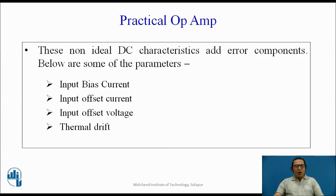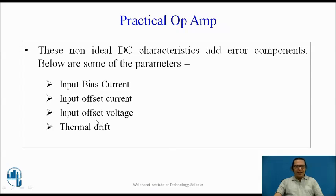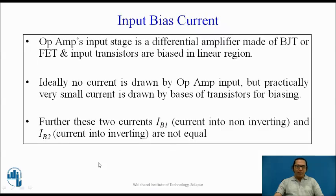These non-ideal DC characteristics add error to the working of an Op-Amp. Because of this, there are several things that may happen. The first is called input bias current, the second is called input offset current, then there is input offset voltage, and then there is what is called thermal drift. Let us have a look at these one by one.